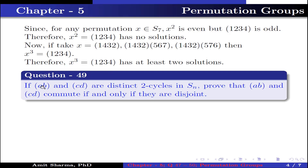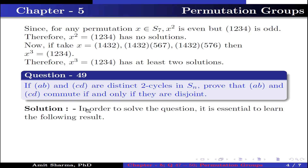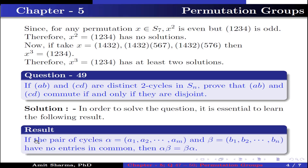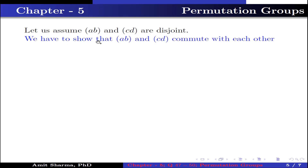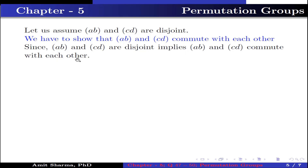Question number 49: If the permutation (a b) and the permutation (c d) are distinct two-cycles in S_n, prove that (a b) and (c d) commute if and only if they are disjoint. An essential result to use: if a pair of cycles alpha and beta have no entries in common, then alpha·beta = beta·alpha, meaning they commute. Let us first assume that (a b) and (c d) are disjoint. We have to show they commute with each other — which follows directly from the result above.